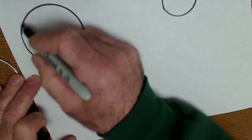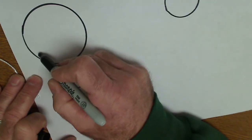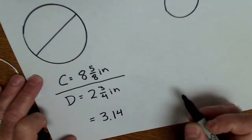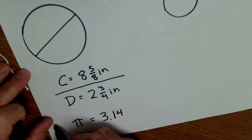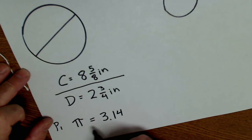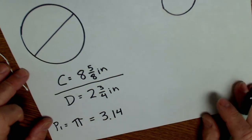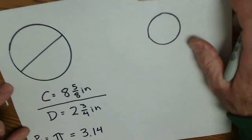But the ratio of circumference to diameter is always the same for any circle. And it's called pi. It's a Greek letter pi. It's a ratio of circumference to diameter. I'll do that for the smaller circle here.